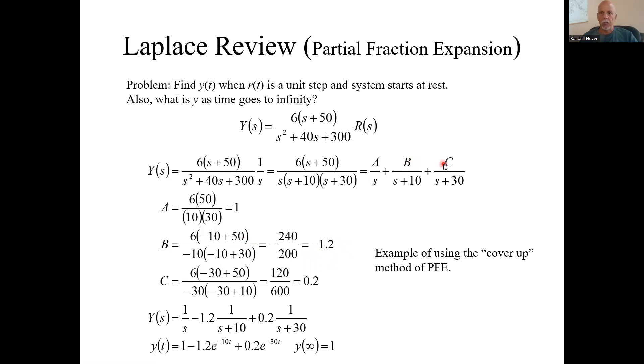C, you do the same kind of thing. Cover up the s plus 30. Evaluate the rest at s equals minus 30. Whatever s makes the denominator equal 0, or the roots of that characteristic equation. There's the arithmetic. There's the result, 0.2.